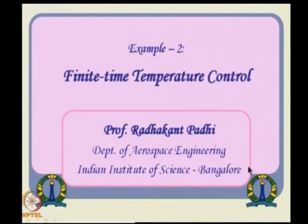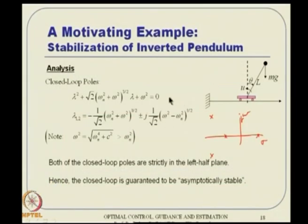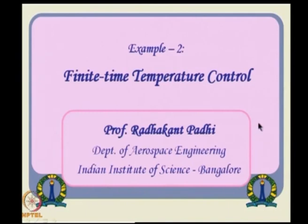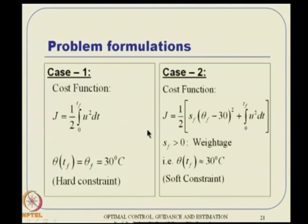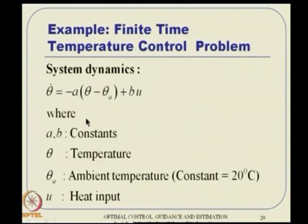Before stopping this lecture, we will look at another interesting example: a finite time problem. This is a temperature control problem in a room. The system dynamics are θ̇ = −a(θ − θ_a) + bu, where θ is the actual temperature. Control is via heat input — heat can be added or removed. If temperature is below desired, pump in heat; if above, extract heat.